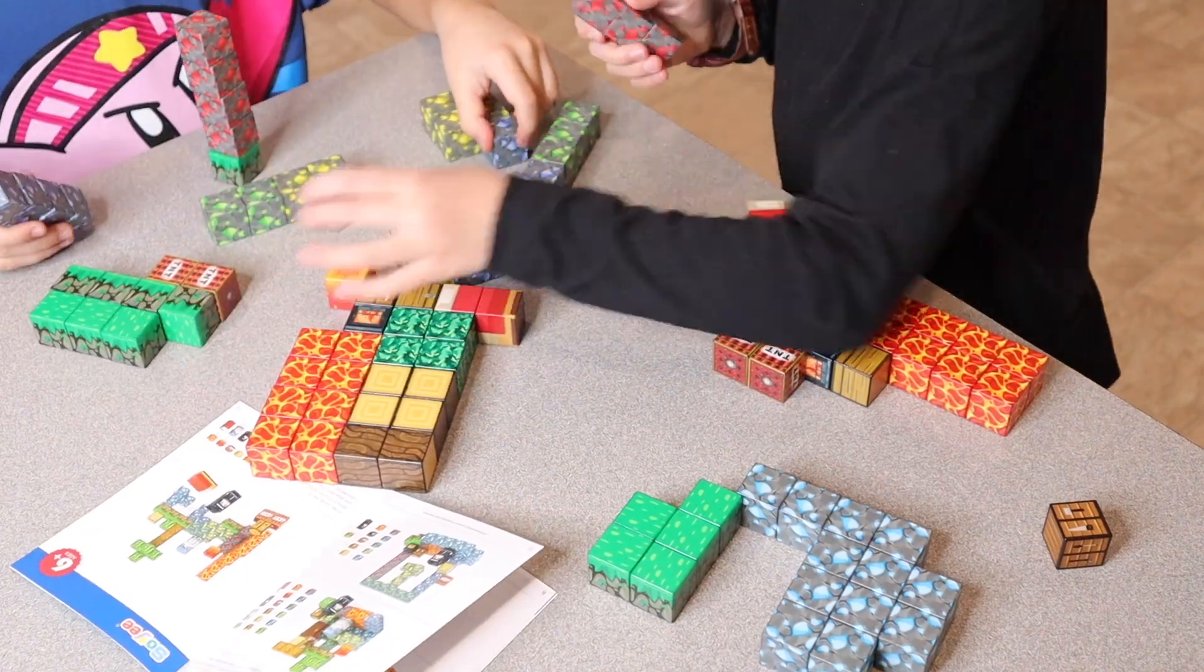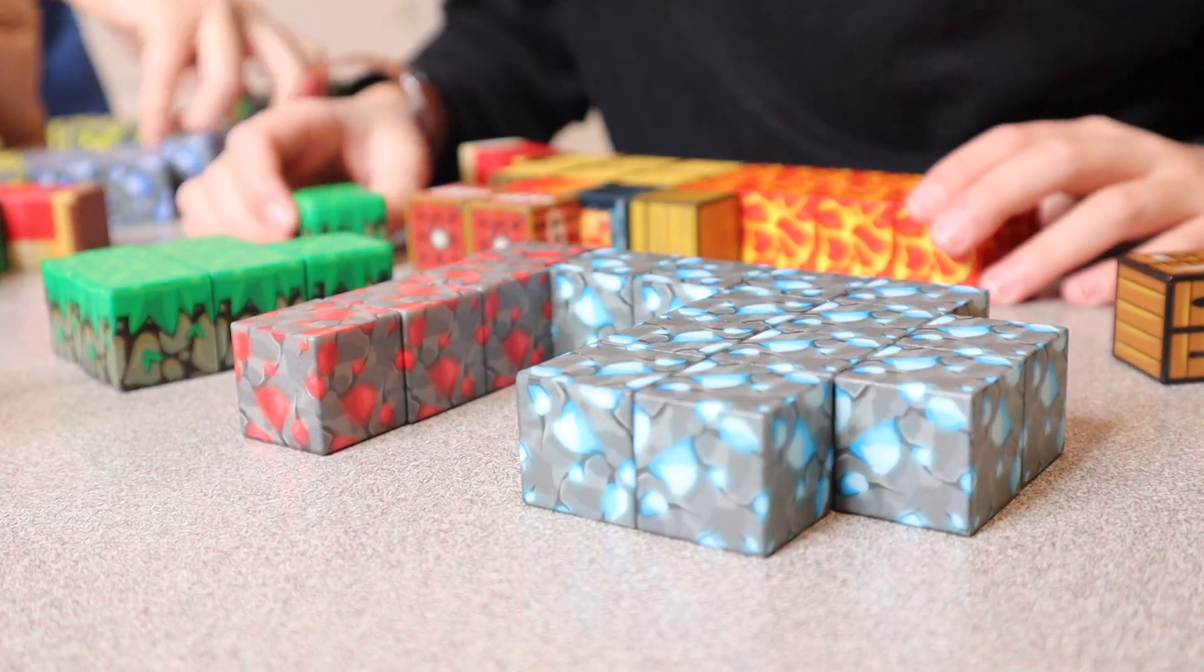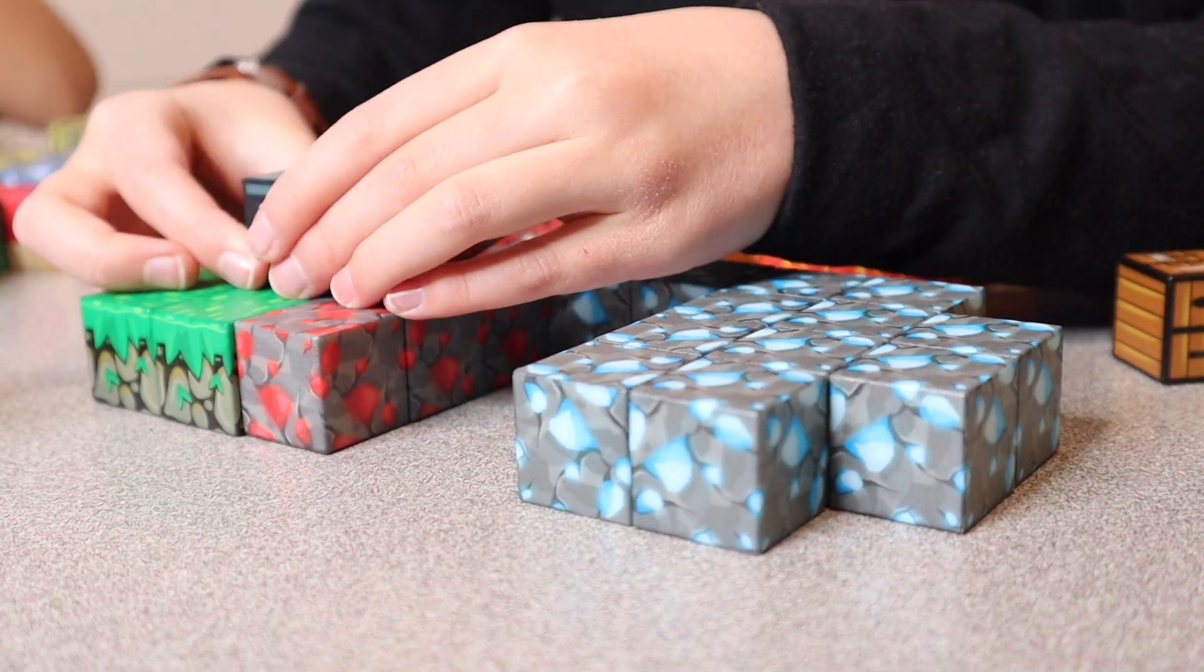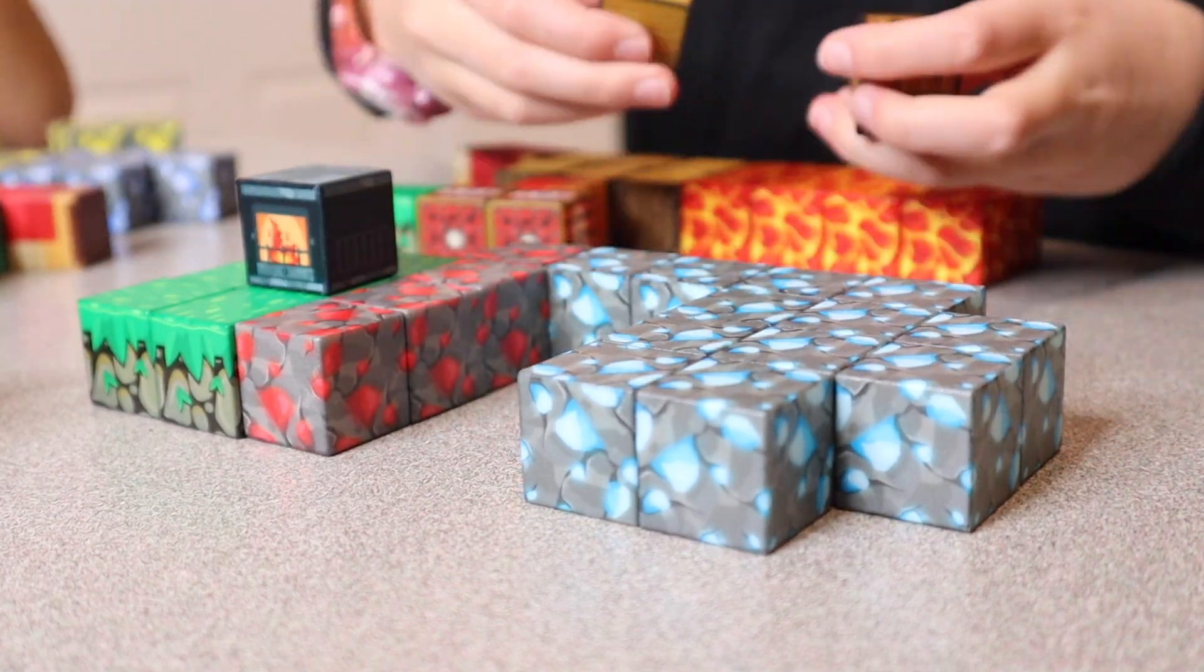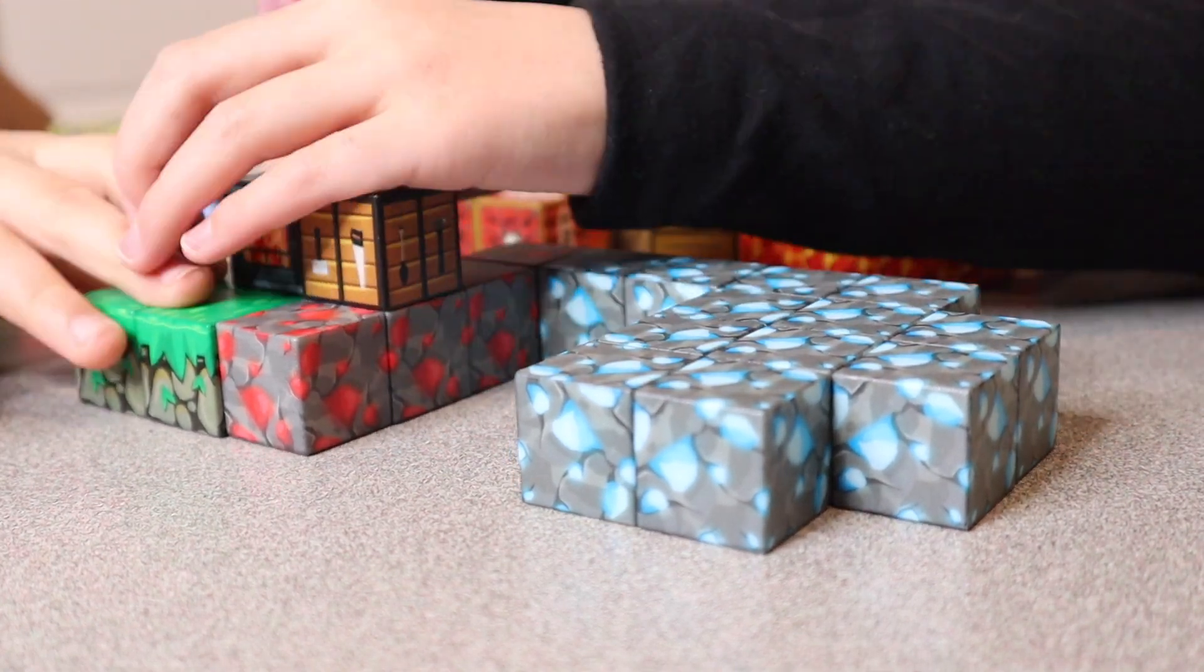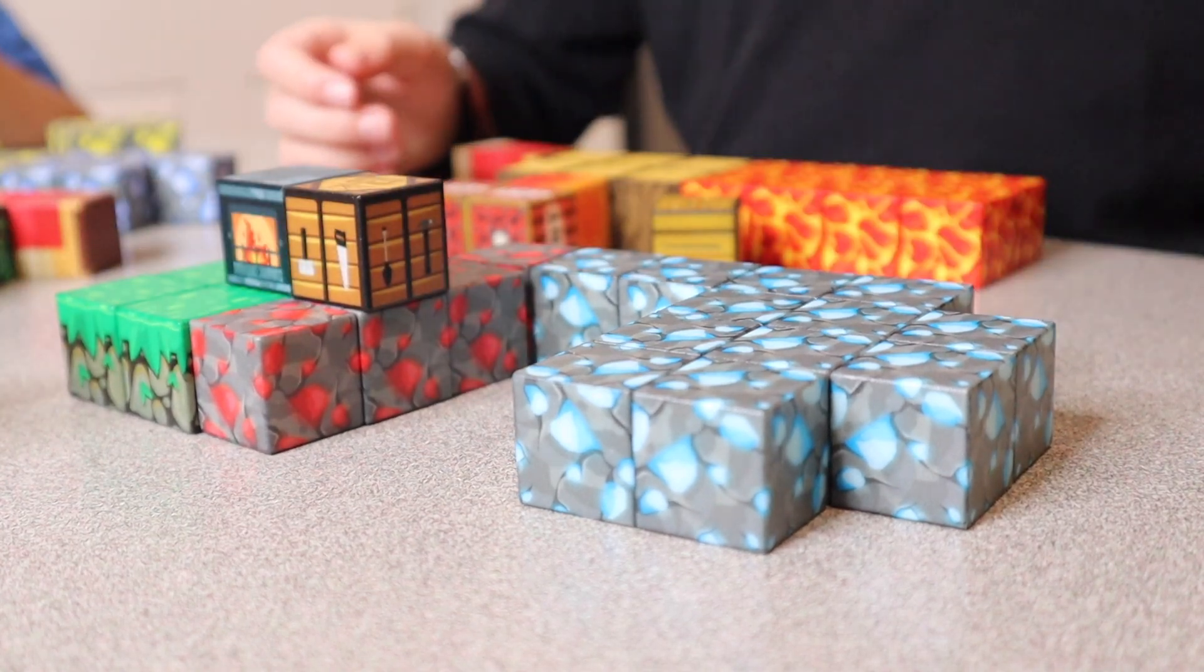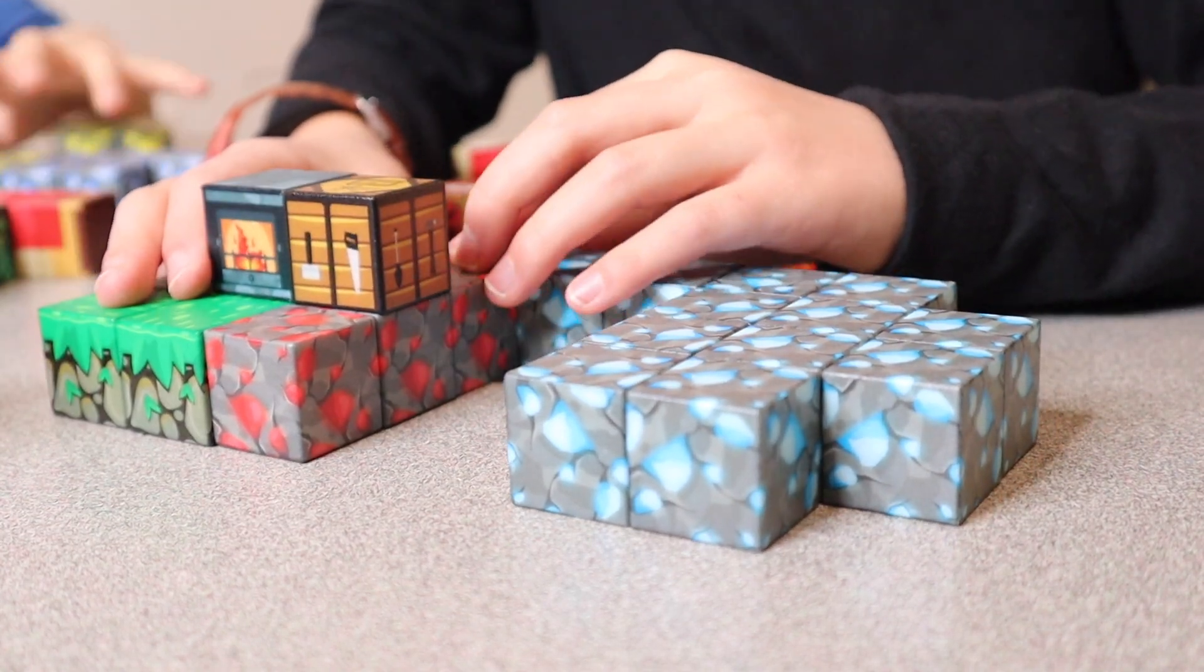Each of these cubes are one inch by one inch and have some really nice strong magnets inside of them. That actually makes it perfect that you don't have to stack these directly on top of each other but you can have them slightly off to the side and they're not going to fall off the block underneath it, which is really fun.